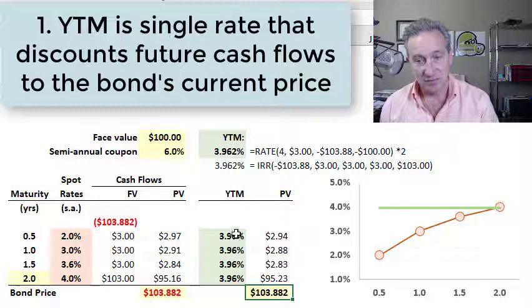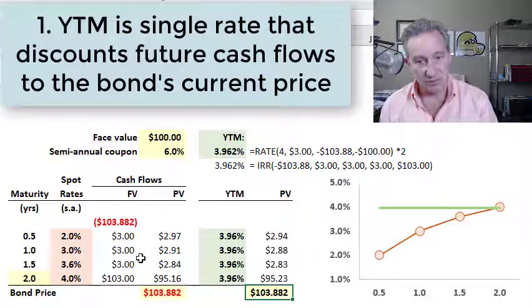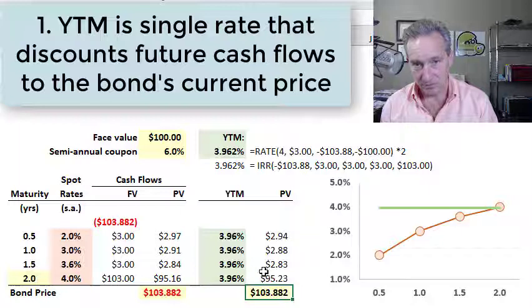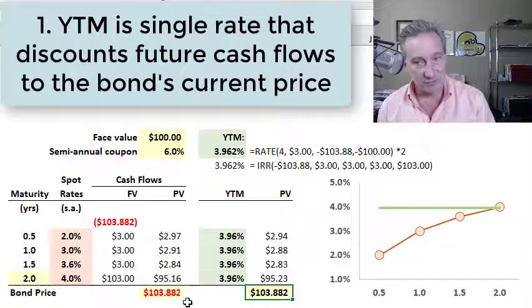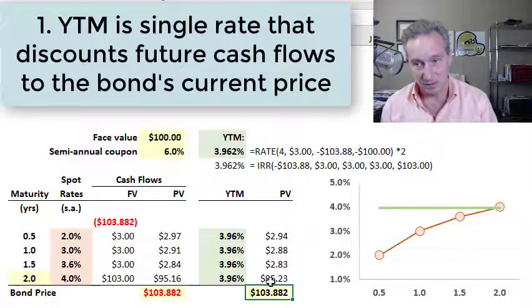So the first important point about interpreting yield to maturity is that it is the single discount rate we could use for all of the bond's cash flows that discounts to a present value equal to the bond's price. That's the meaning of the yield to maturity.